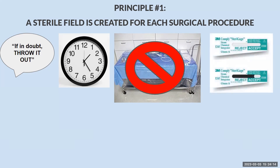The chemical indicators must be checked to ensure the instruments have been exposed to the sterilization process. If the chemical indicators have not changed to the proper color, as you see on the top indicator here, the instruments should be considered non-sterile and should be passed off the field and not used on the patient.